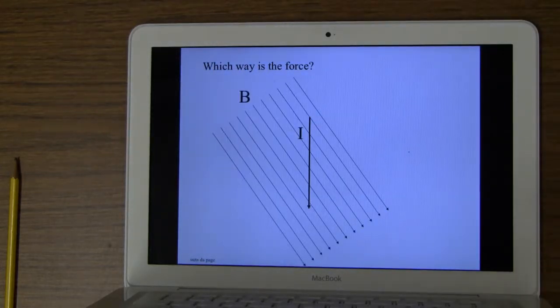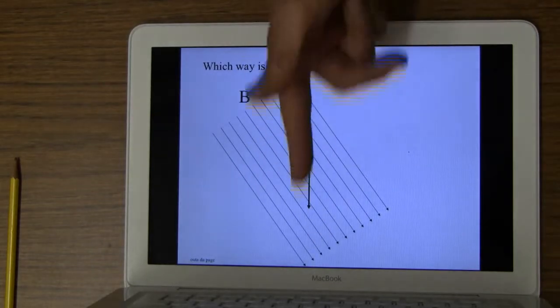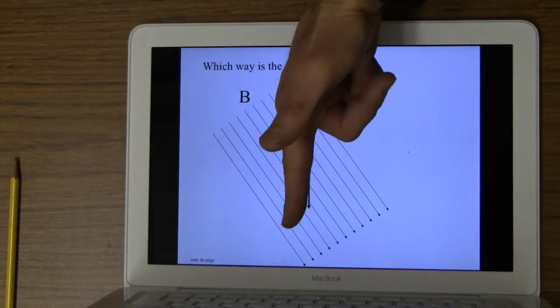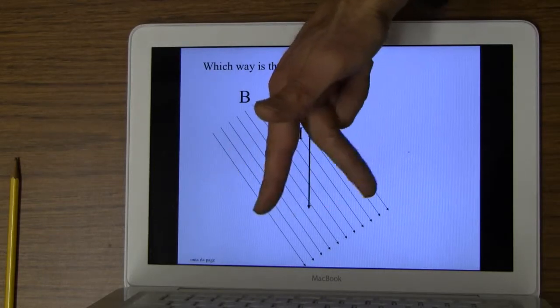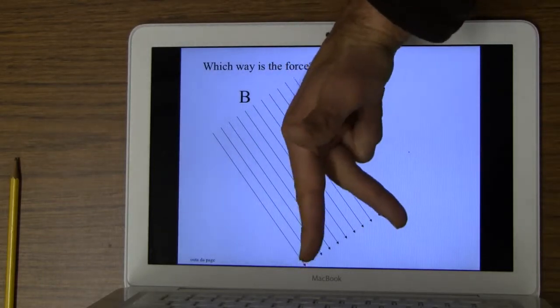Let's try another one. Okay, so current is that way, magnetic field is that way. Remember the magnetic field can be anything in here, it can't go that way, it can go this way though. All right, so this is still out of the page.